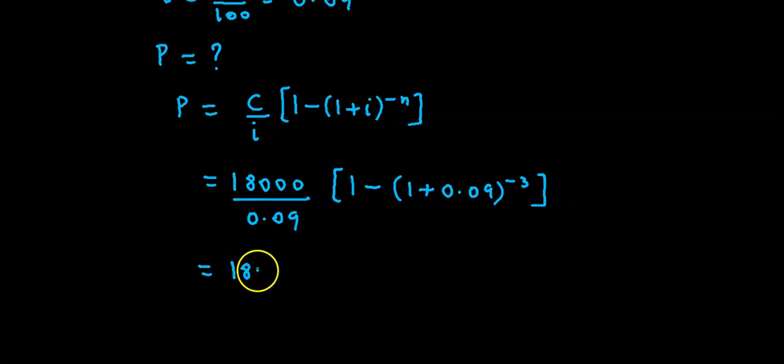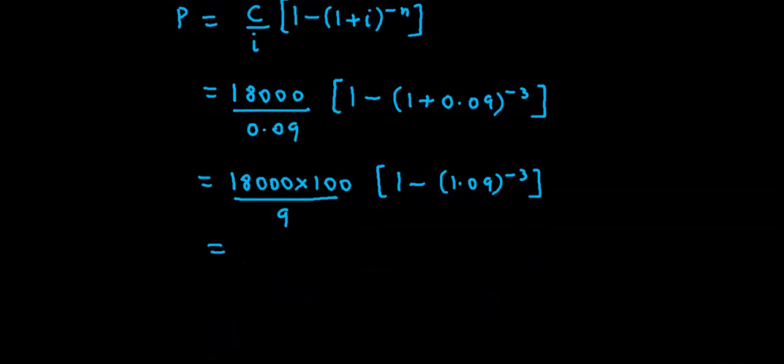So this becomes 18,000 into, removing two decimals, numerator into 100 divided by 9 into 1 minus. This total becomes 1.09 raised to minus 3.